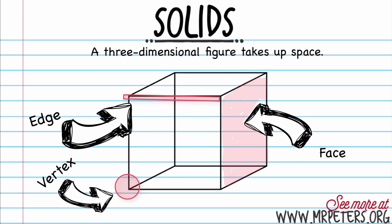So first there are some terms we must know. The first term we're going to look at is edge. When we think of an edge, I want you to think of the actual lines. On a box, it would be where the two sides meet — it makes a crease. This is an edge, this is an edge. We have all of our edges here.